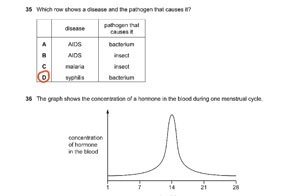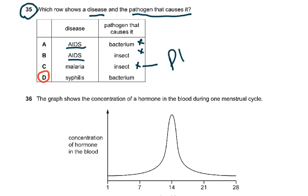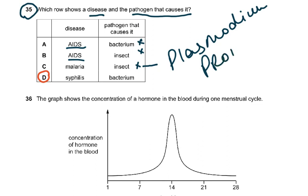Question 35: Which row shows a disease and the pathogen that causes it? AIDS is caused by a virus — the given option was wrong. Malaria is not caused by an insect; it is caused by Plasmodium, which is a protozoan — not a bacteria and not a fungus, but a separate category of organisms. The only correct answer was syphilis caused by bacteria.